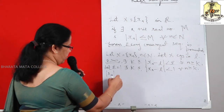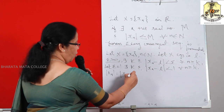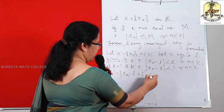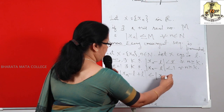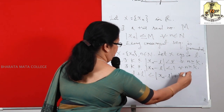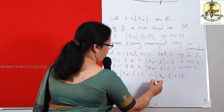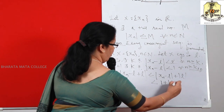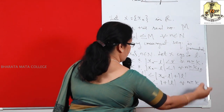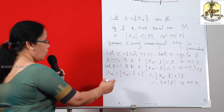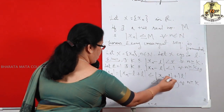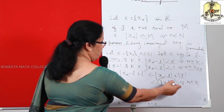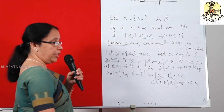Now consider modulus of X_N. We can write it as modulus of (X_N minus L + L) — adding and subtracting L. By the triangle inequality, this is less than or equal to modulus of (X_N minus L) plus modulus of L. Applying the inequality, we get this is less than 1 + modulus L, for all N ≥ K. So modulus X_N < 1 + |L|, which is a fixed real number, but only for N ≥ K, not for every N.